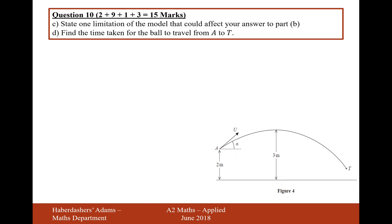Let's move on to part C: state one limitation of the model that could affect the answer to part B. From the mark scheme, acceptable answers include: there will be air resistance; the ball will have dimensions; there might be spin on the ball; there might be effects of wind; and if you're a cricket fan, there might be swing on the ball, which may affect the travel of the ball.